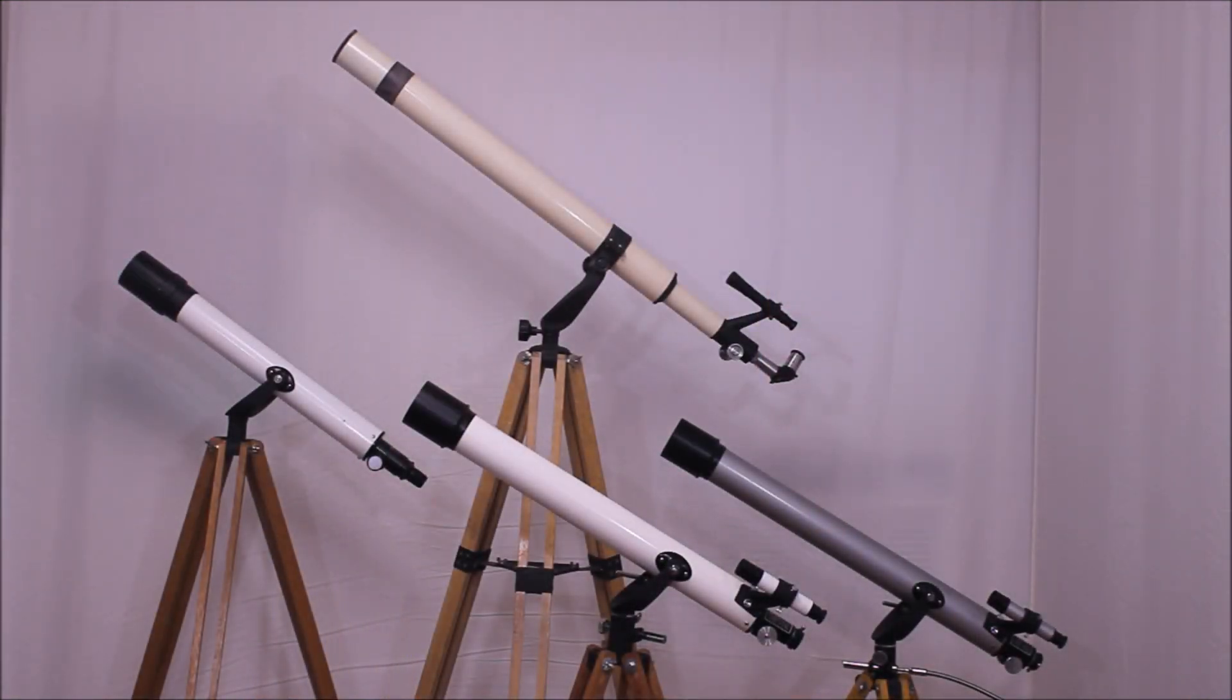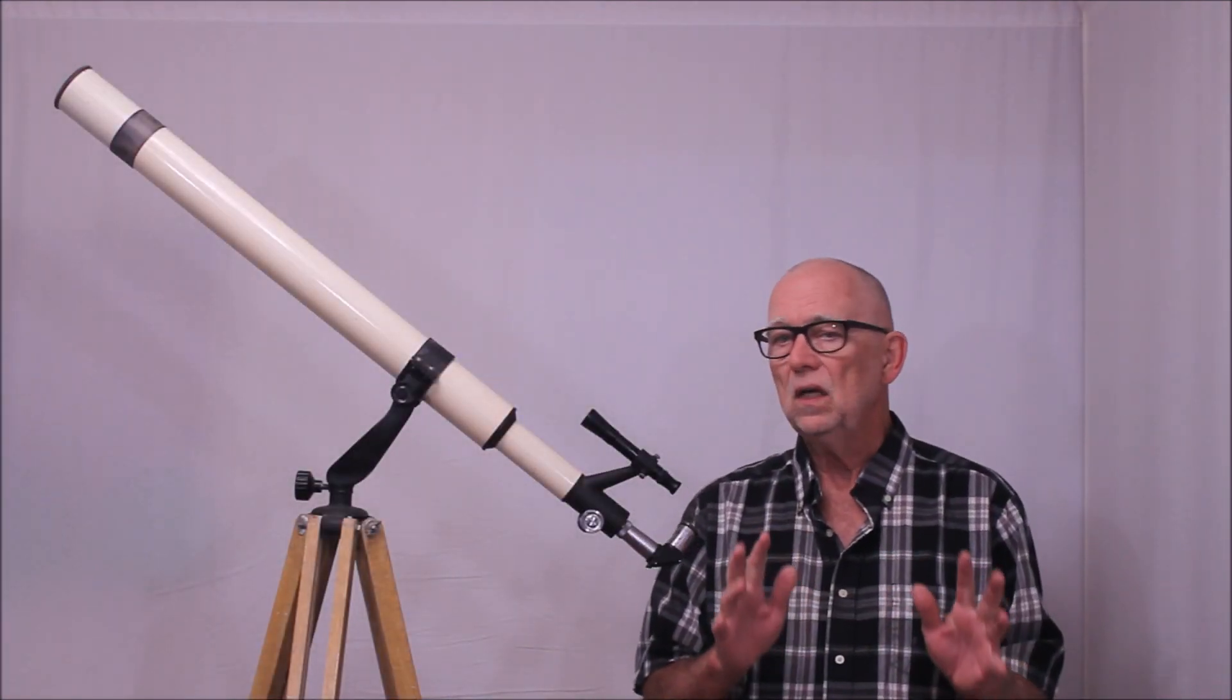Can you pick out the swan amongst all these ordinary ducks? Look at the long graceful lines of the Atlas, the beautiful fluidity of it compared to these other really ordinary mundane telescopes from the same period on similar mounts. I think you can see that the Atlas has a much more aesthetic appeal to it. This thing is beautiful.